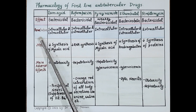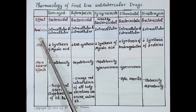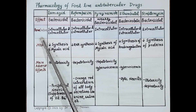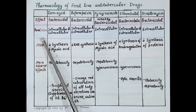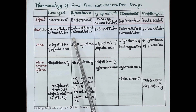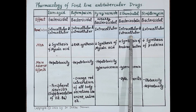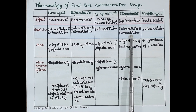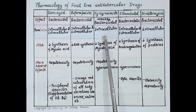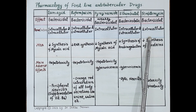An important parameter is the penetration of the drug. In the alveoli of the lungs, bacilli are engulfed by macrophages as the first line of defense, so bacteria can be present intracellularly or extracellularly. Isoniazid, rifampicin, and ethambutol act on both intracellular and extracellular Mycobacterium tuberculosis, while pyrazinamide acts only intracellularly and streptomycin acts only extracellularly.